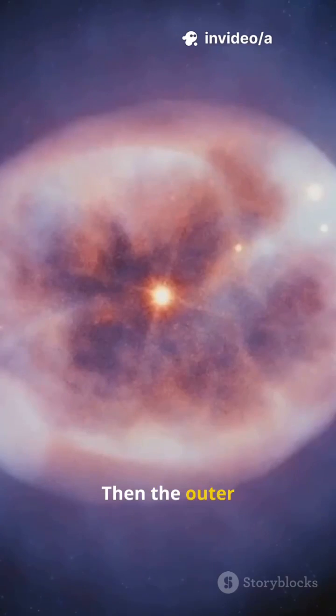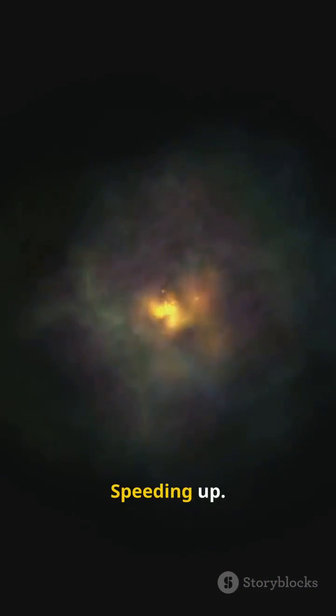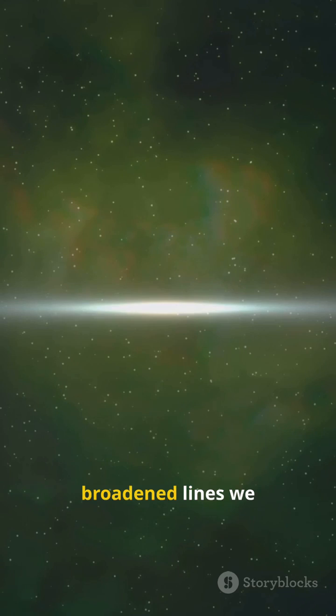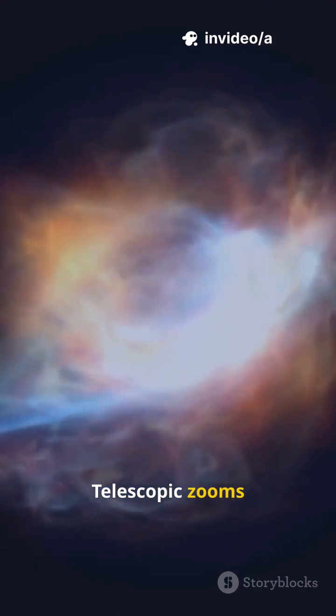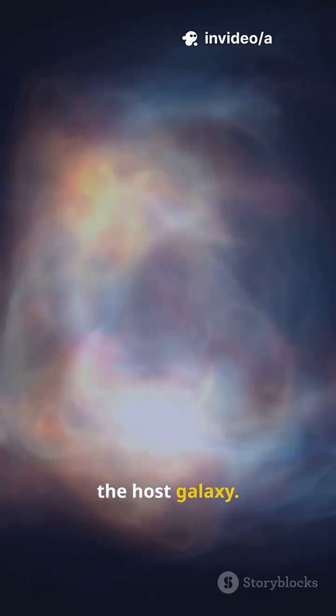Then the outer layers expand, thinning, speeding up, giving the telltale broadened lines we read in spectra. Telescopic zooms pull back to show the host galaxy.